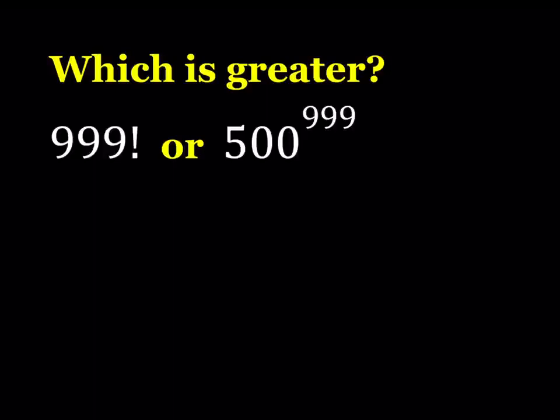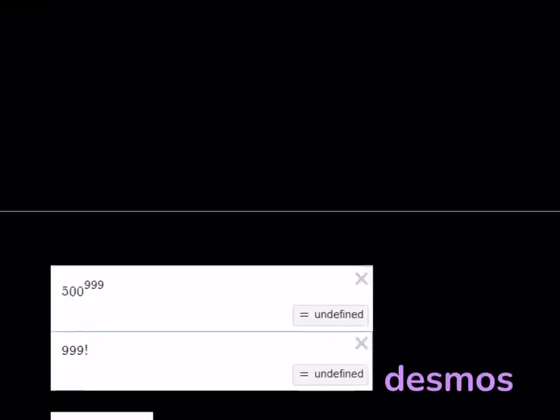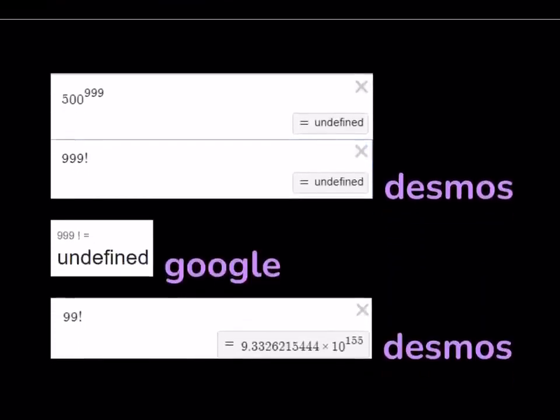Obviously, by using logarithms, we can figure out how many digits the number 500 to the power 999 has, but 999 factorial is not going to be that easy. When we put it into Desmos, we get undefined for both of these numbers because they're very large. Google doesn't give us a definite answer either.